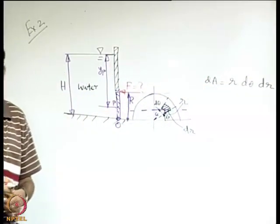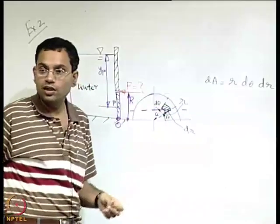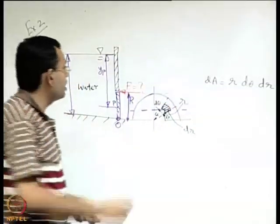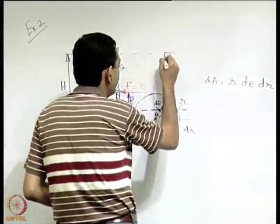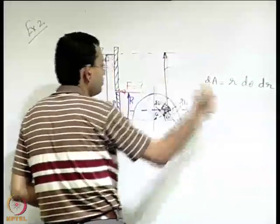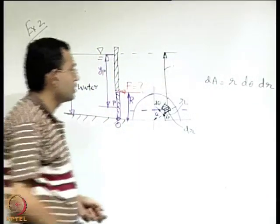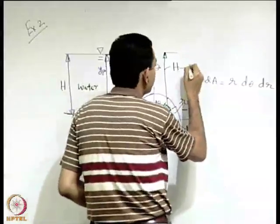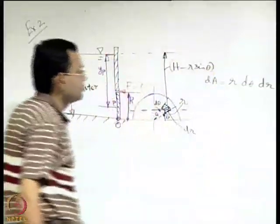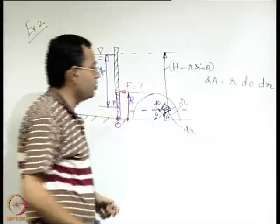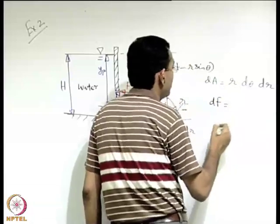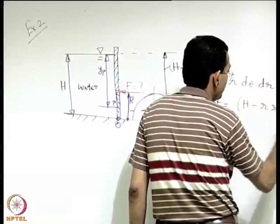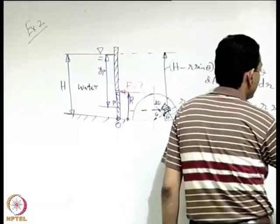The force acting on this element is due to pressure. The pressure is related to the local height of the element. The local height is capital H minus r sin θ. So the force dF acting on dA equals (H − r sin θ) × ρ × g × r dθ dr.